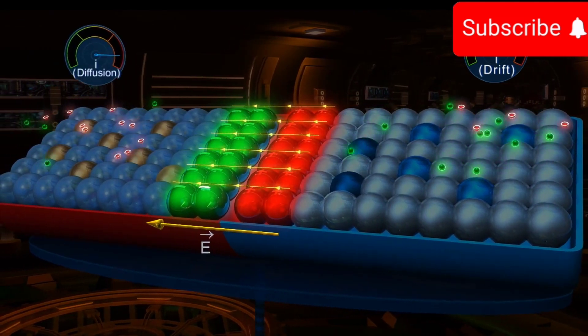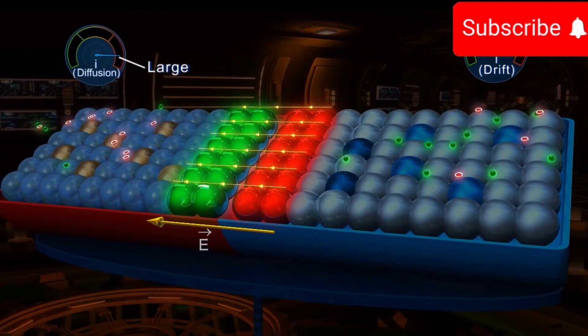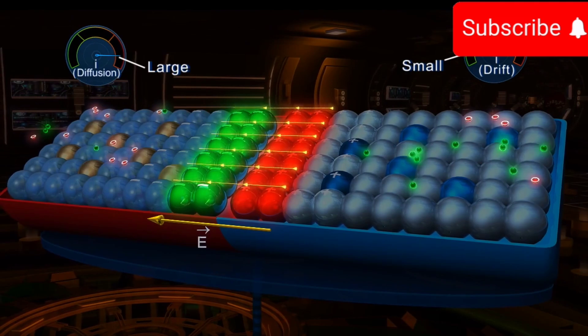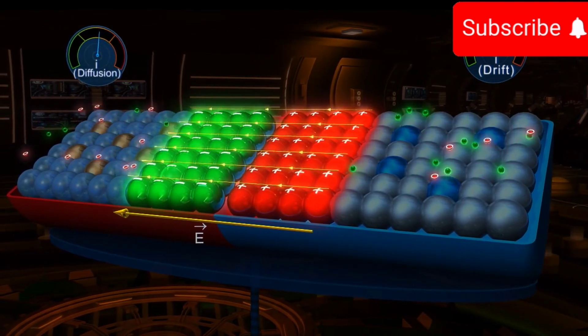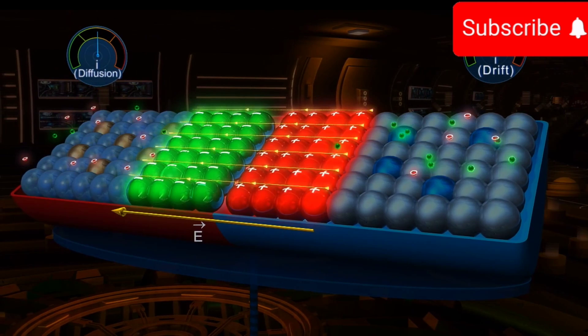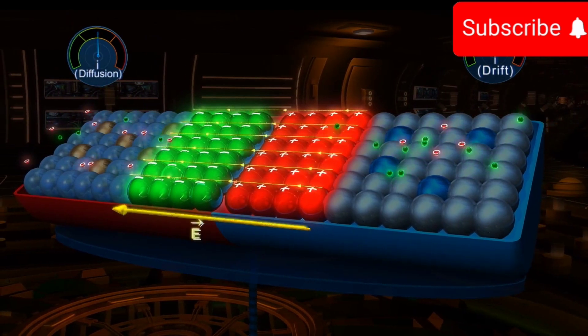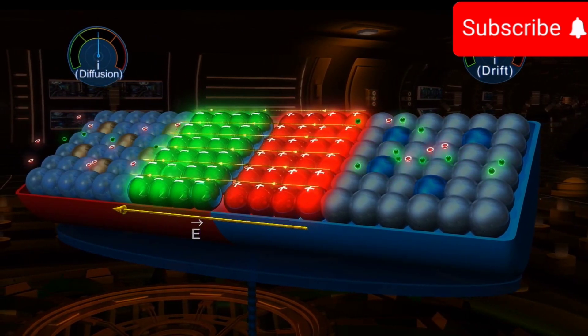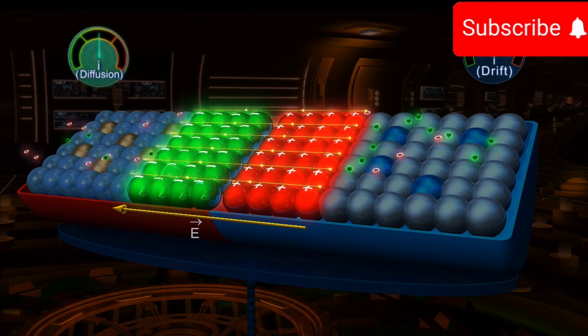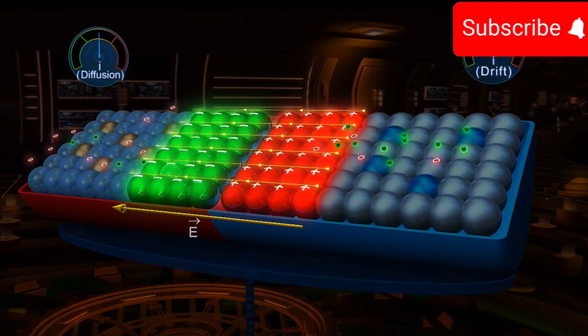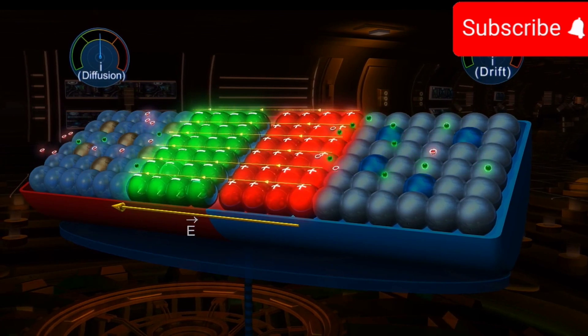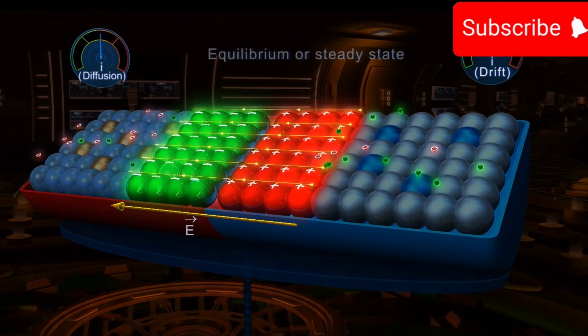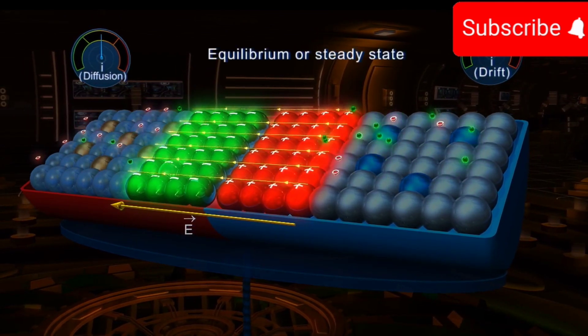Initially, the diffusion current is large, while the drift current is small. As the process of diffusion continues, the accumulation of positive and negative ions near the junction increases. This results in an increase in the electric field, causing decrease in the diffusion current and increase in the drift current. The process continues till the diffusion current and the drift current become equal, resulting into an equilibrium or a steady state.